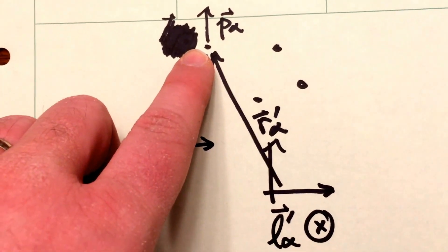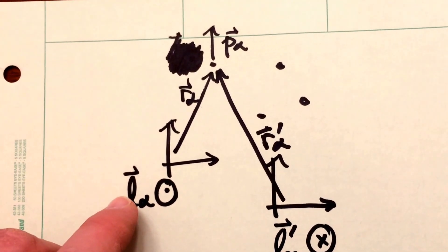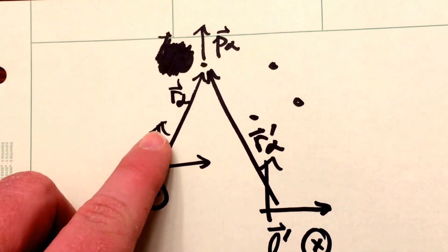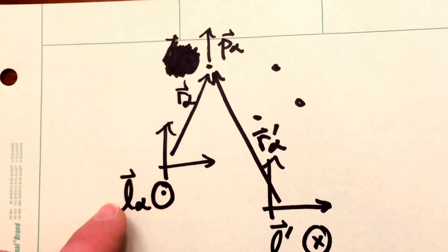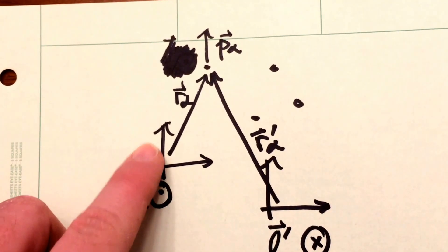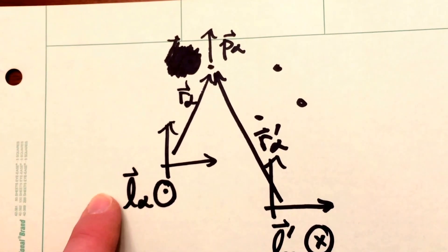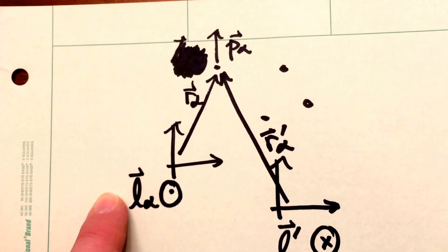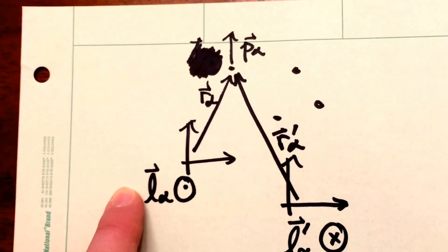Let's imagine that this particle has a momentum, p alpha pointed like this. The position vector of that particle in this coordinate system is this vector right here. So it points from here to that vector. And when we cross that r vector into that p vector, we get an angular momentum for that particle that looks like this pointing out of the page.